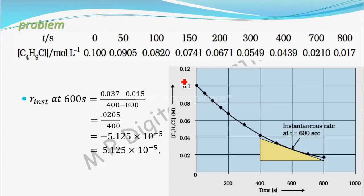Here I have drawn the time axis. From this data, you draw the graph. This is the time axis and this is the concentration of butyl chloride axis. When you draw a graph from this data, you will get a curve like this.